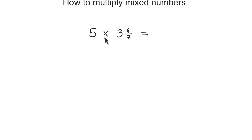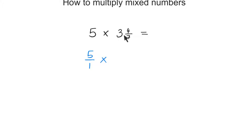Here we have 5 times 3 and 4 sevenths — a whole number being multiplied by a mixed number. All we need to do here is to write the 5 as a fraction: we can write it as 5 over 1. And we need to convert 3 and 4 sevenths into an improper fraction: we do 3 times 7, which is 21, plus 4, that's 25, so that is the numerator. The denominator will be just 7.